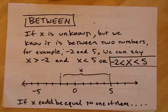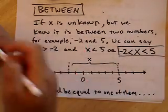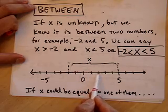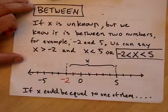Now, we've got a new thing here called between. Suppose x was unknown, but we know that it's between two numbers. For example, suppose you know it's between negative 2 and 5. We know x is somewhere in here. We don't know where x is. It could be anywhere in here. But we know it's between negative 2 and 5.